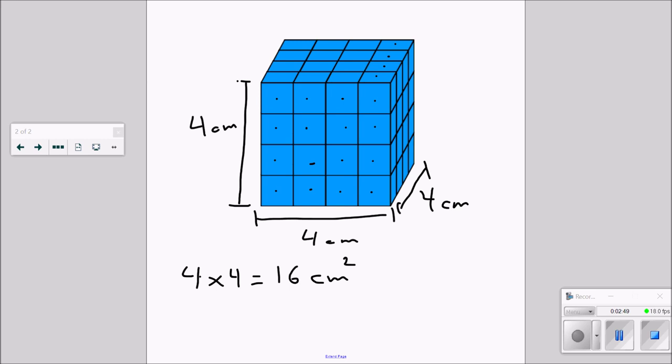So my depth here is another 4 centimeters. Now, if I've got 16 on the front layer, I also have 16 in each of those four layers back. So now I need to multiply it again. I've got 4 centimeters times 4 centimeters for the front times another 4 centimeters for the rest of this cube.